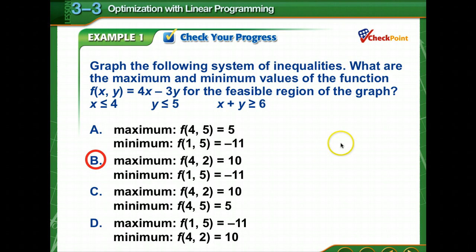Very good. The maximum was 10, and that's at the vertex 4, 2. And the minimum is negative 11 when the vertex is at 1, 5. So this was a totally bounded feasible region.